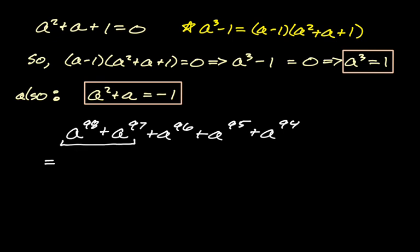I'm going to instead kind of factor by grouping. So I'll group the first two things. I can take out a to the 96th. Like I could take out a to the 97th, but I don't want to do that because if I take out a to the 96th, I get a squared plus a, which I know is negative one.